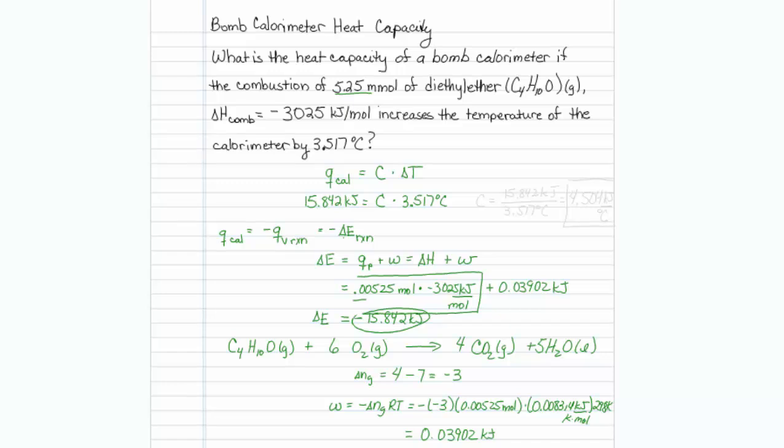Well now I just have to divide it by the temperature. So my heat capacity is going to be equal to 15.842 kilojoules divided by 3.517 degrees Celsius,